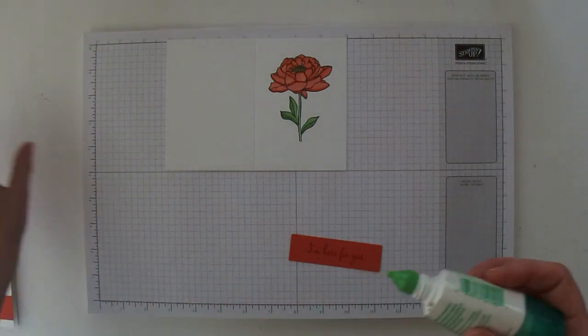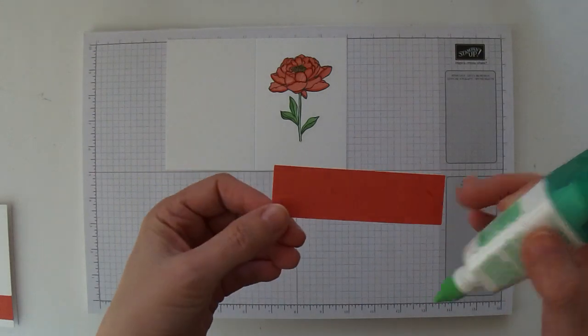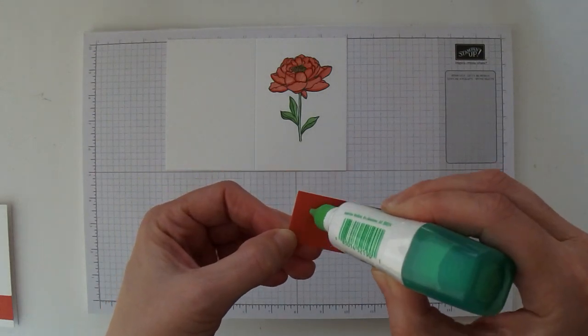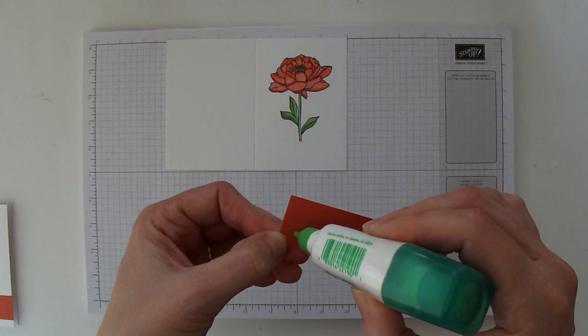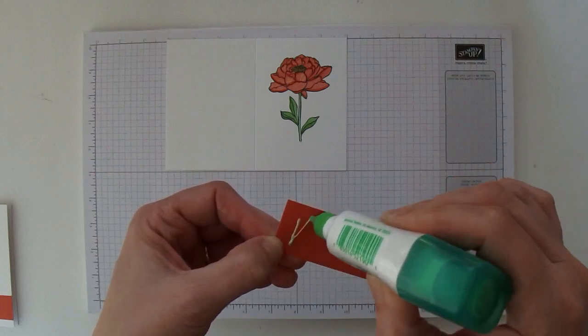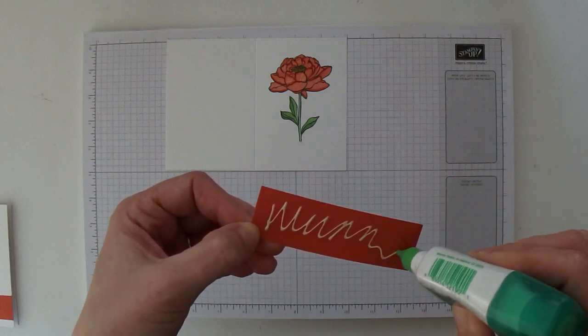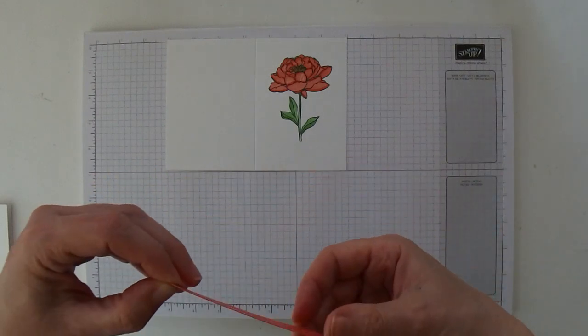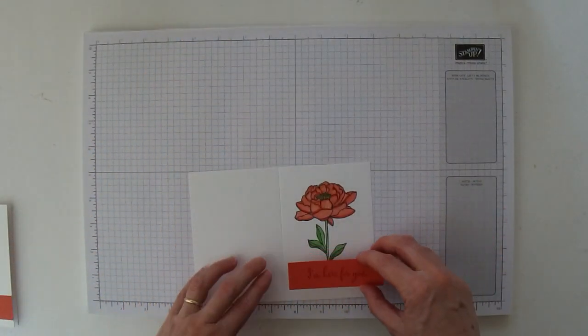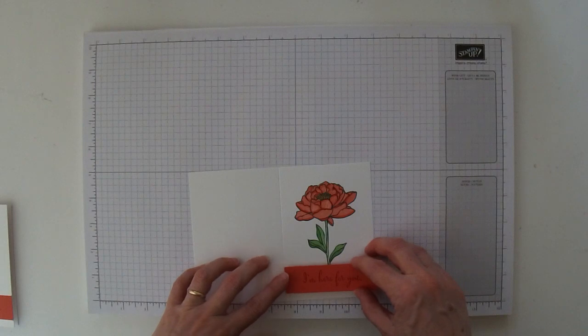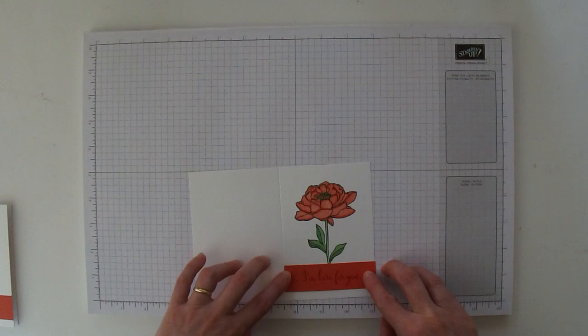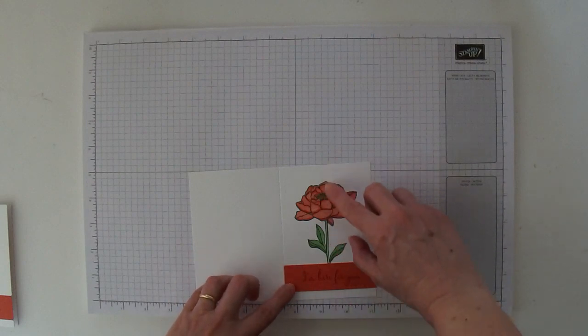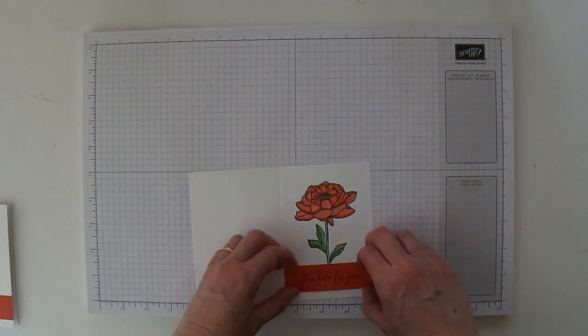Okay and then all we need is a little bit of adhesive and I'm going to put this on the back, this is Tombow multi-purpose glue. It is good stuff, it sticks very very well. And then I'm just going to scoop my card up here and we're going to put this maybe three eighths of an inch from the bottom. It will depend on where your, how far up or down you stamped your rose.